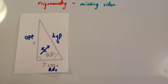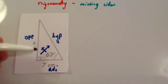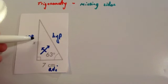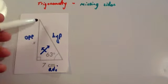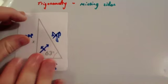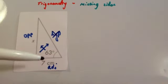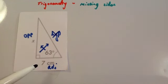Next step: cross out the side that hasn't been given or hasn't been asked for. Notice the adjacent has been given to you. The opposite is the one opposite the angle, and it's the one with the X beside it, meaning it's wanted. The hypotenuse hasn't been given and hasn't been asked for, so we can cross it off. We've been given one side and trying to find another, so we're using the opposite and the adjacent here.